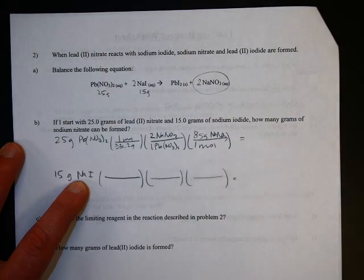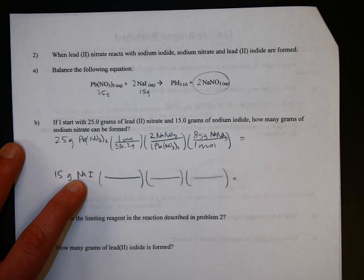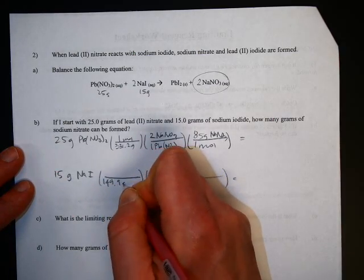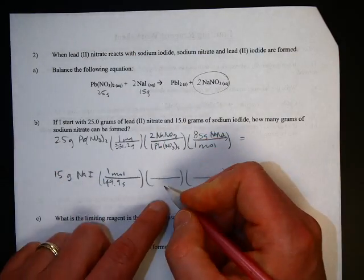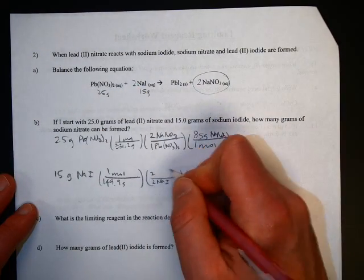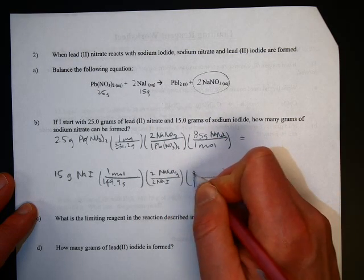So the same thing here. Sodium iodide is 126.9 plus 23. That would be 149.9. And molar ratio is that two of them give you two sodium nitrates. And that molar mass is still 85 grams.